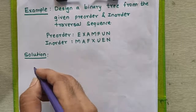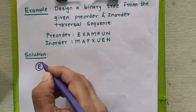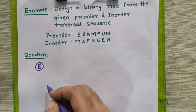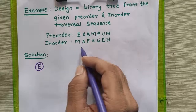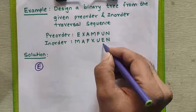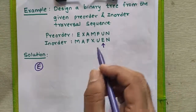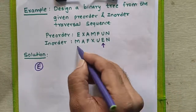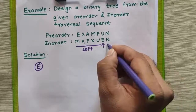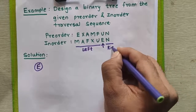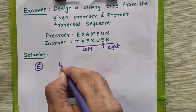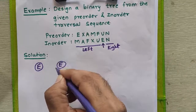We'll draw the root node E here. After getting the root node, to get the left child and the right child of node E, we will refer to the in-order sequence. Now go and check in the in-order sequence where E appears. We found E here — it means the part which appears on the left-hand side must be placed into the left subtree, whereas the part which appears on the right side must be placed into the right subtree. We'll place it into the tree now.